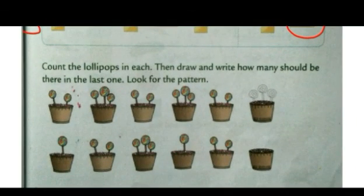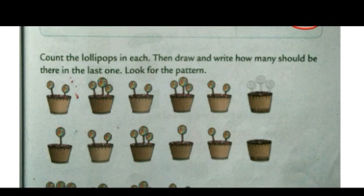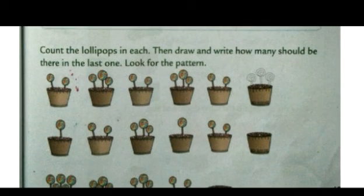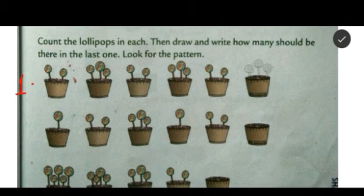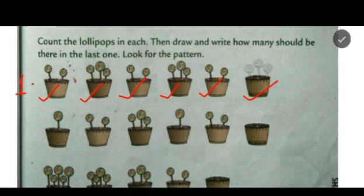Now see the next question: Count the lollipops in each, then draw and write how many should be in the last one — look for the pattern. Just see the first one: there are two lollipops, then three, then two, then three, then two — so three will come next, but it's already drawn. You only have to color it.